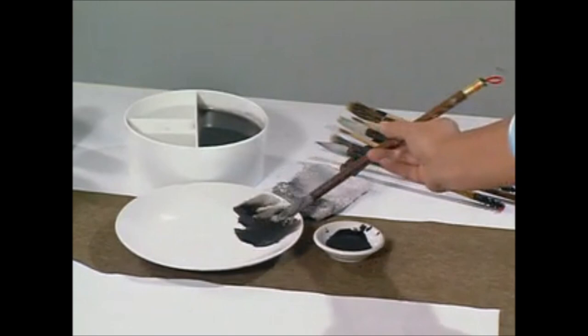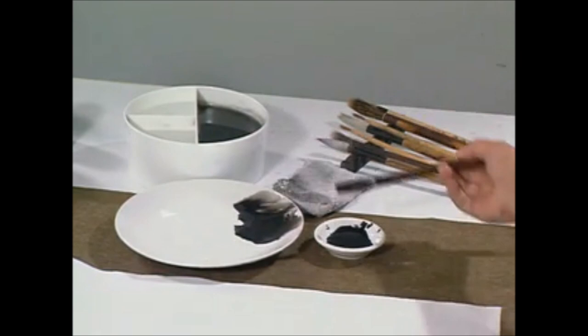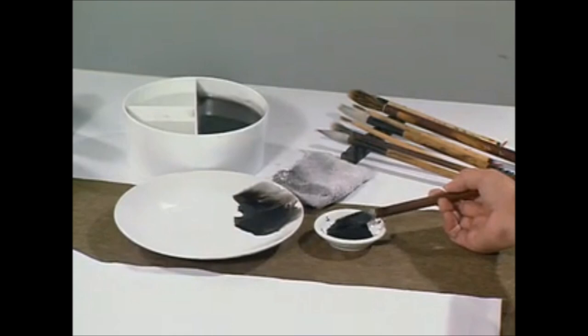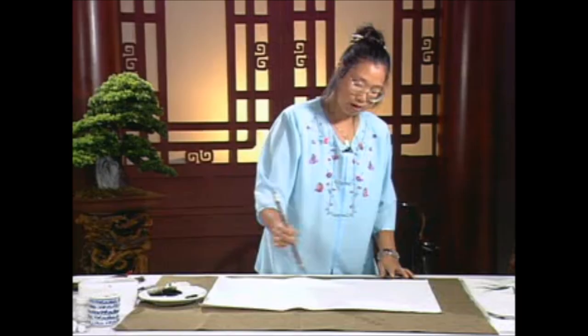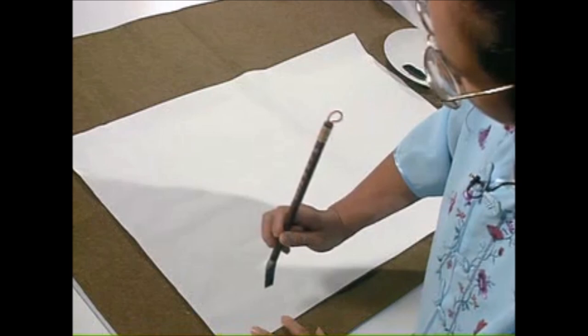Then pick up the dark ink from side to the side. You can see dark ink on the side and middle it has light ink. And then mix, and mix again side. Then you come to the paper. Use the vertical position and work on the stem.